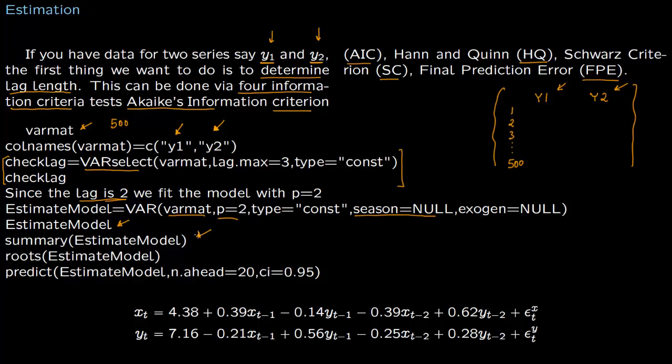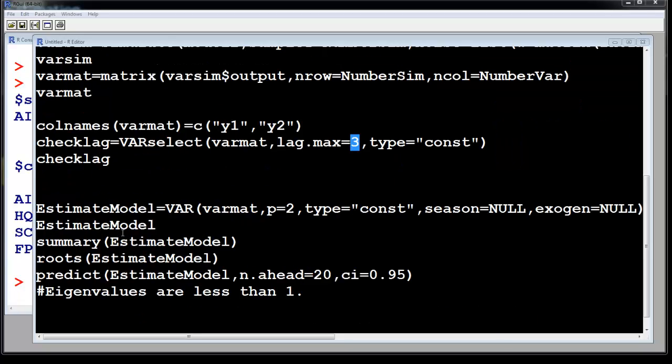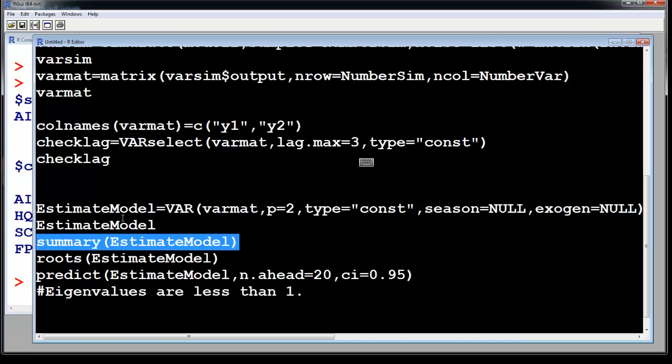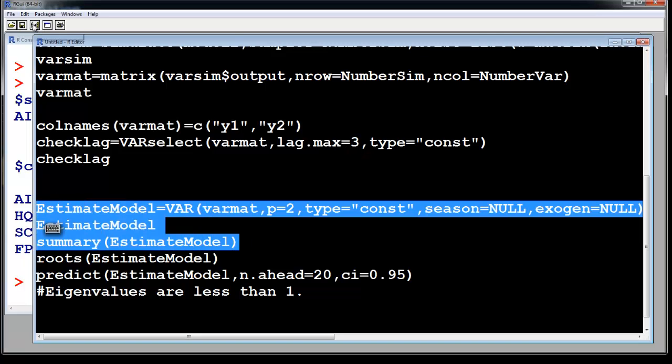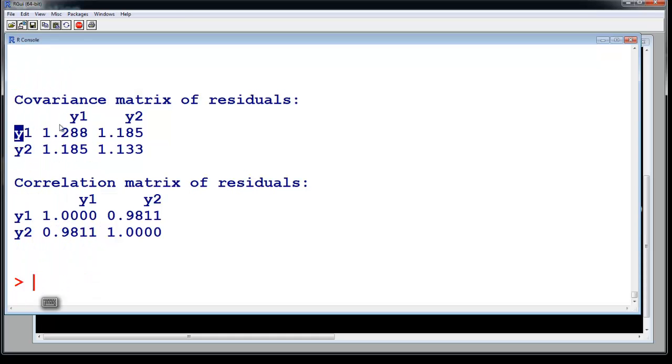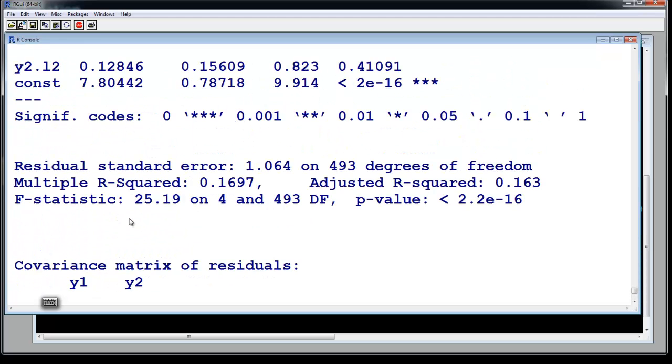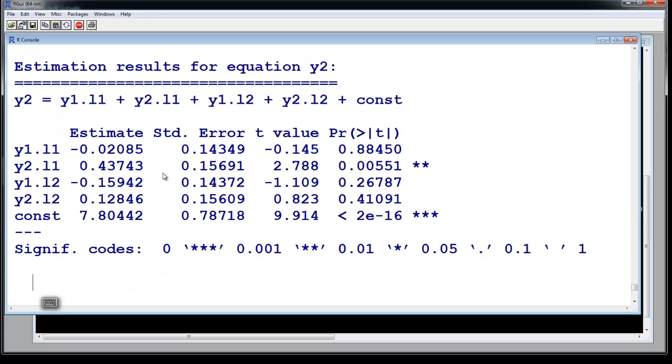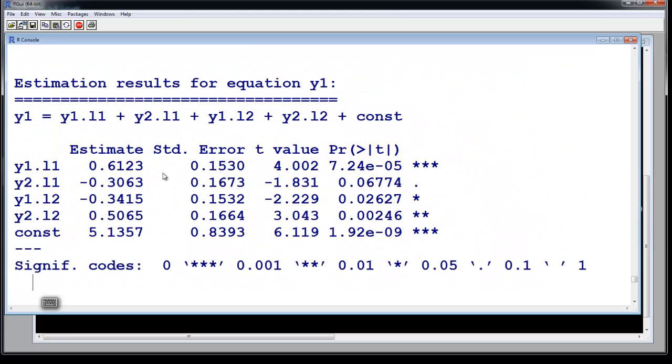The model will come out and then we will have the summary. These are estimate model commands. We are just going to find the summary of the model also. Let us run these three. So you run it, you get covariance matrix for y1 and y2, so this is our results.